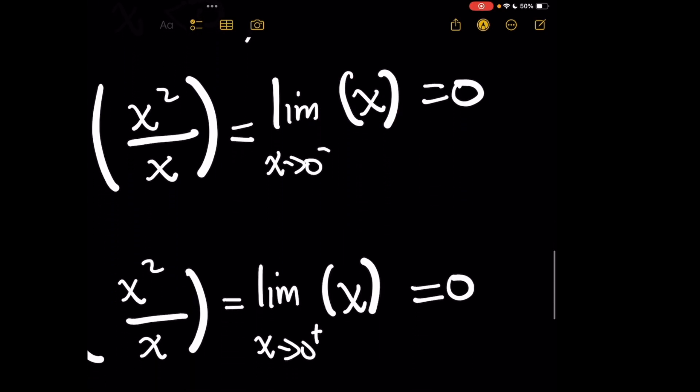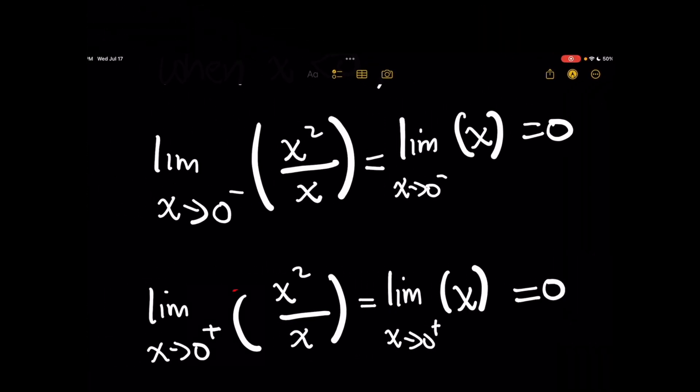And repeating this for the right-hand side, using the plus notation here, approaching the origin from the right would have a similar expression that's simplified of x squared over x, giving you x. And when you plug in 0 safely into this limit, you'll get 0.